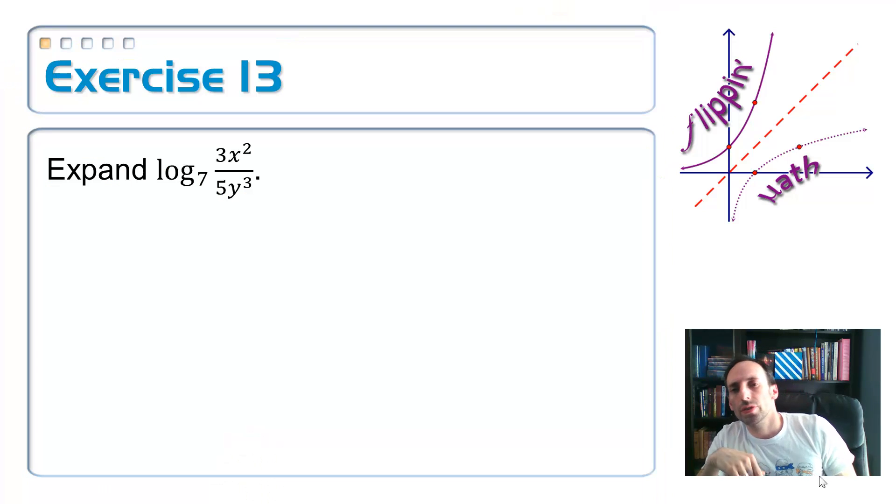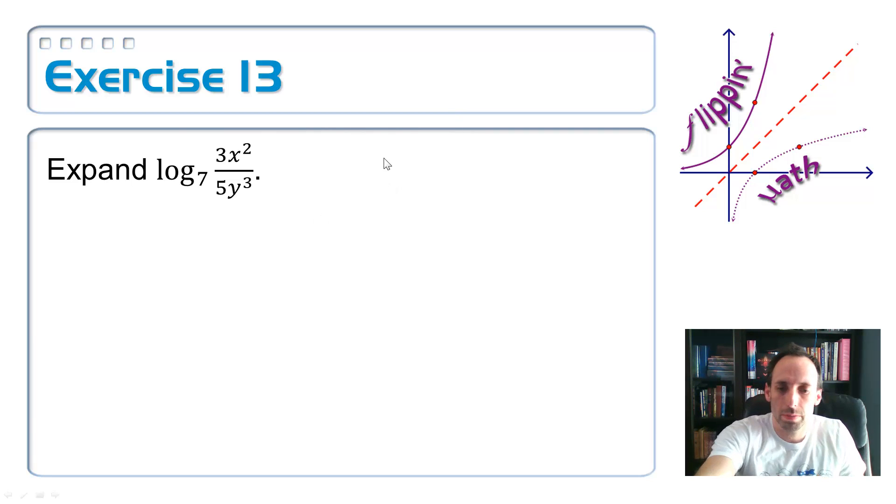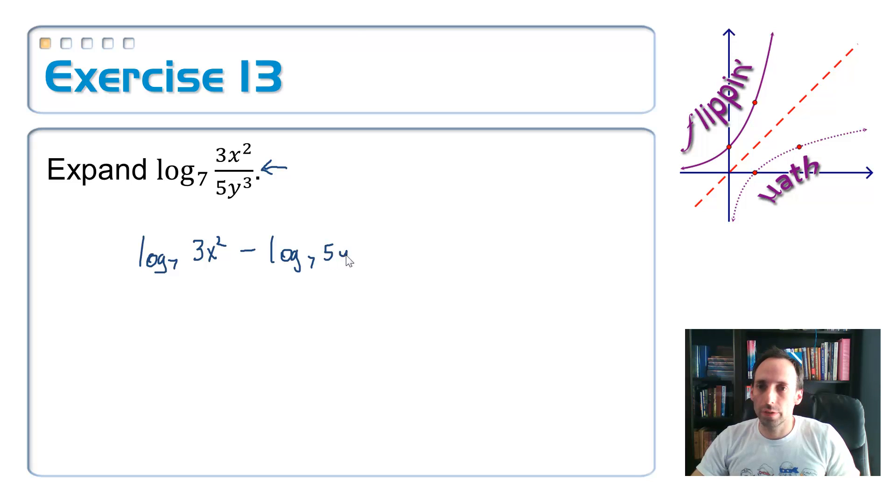So on exercise 13, we're expanding out this logarithmic expression. Expanding means I'm going to take something that's compact and stretch it out. Now, using those properties that we talked about before, so log base 7 of, and then I have a quotient. I want to take care of that quotient part first, and how do I take care of that? By subtracting the logs of the two divisors.